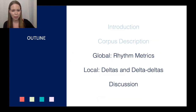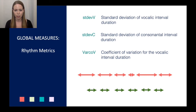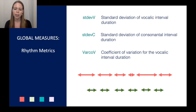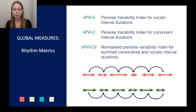Moving on to our analysis of the global rhythm metrics, I'll briefly review the six rhythm metrics considered. The first three are: the standard deviation of vocalic interval durations, the standard deviation of consonant interval durations, and VarCoV — the coefficient of variation for vocalic interval durations. These get at overall variability in the durations of these intervals. The next three are the pairwise variability indices for vocalic, consonant, and summed consonant-and-vocalic interval durations, capturing how much variability there is between adjacent intervals.